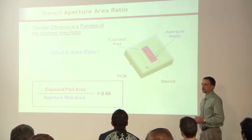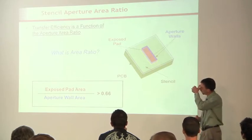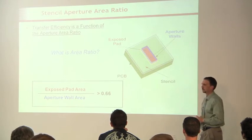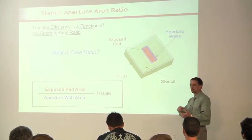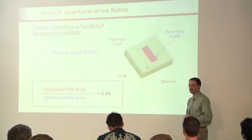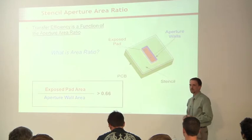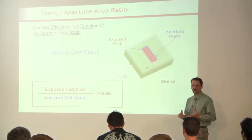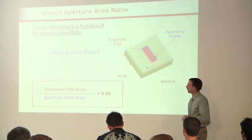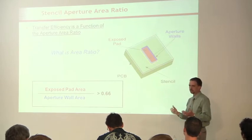So area ratio. This is critical. When you're designing a stencil, you need to know what your area ratio, particularly of your smallest pads are, to kind of get a feel for whether or not this is going to print, if it's going to release. And it's, as mentioned before, it's a ratio of the exposed pad on the board to the total aperture wall area on the stencil. And you take the exposed pad area, divide it by the aperture wall area, and what you want to see is a number that's .66 or larger. And what that means is, it's basically a ratio, it's a percentage. You want the exposed pad to be at least 66% as big as your total wall area in the stencil. Larger is better. If you've got something that's one or greater, that means you've got more pad than you have aperture, and you can print that all day.